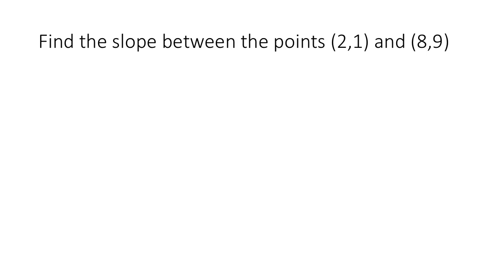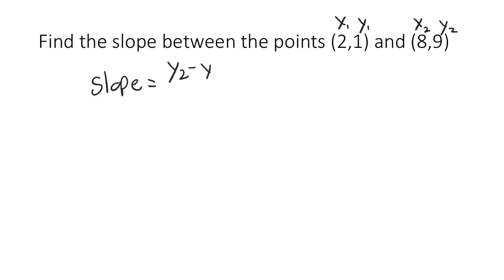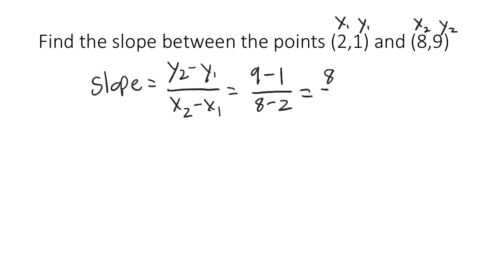Let's use our newfound formula to find the slope between these two points: (2, 1) and (8, 9). We just need to know the values of x1, y1, x2, and y2. We can label them: x1 = 2, y1 = 1, x2 = 8, y2 = 9. So the slope is going to be y2 minus y1 over x2 minus x1 — that's 9 minus 1 over 8 minus 2. 9 minus 1 is 8, and 8 minus 2 is 6, so 8 over 6 is our slope. We usually want to give this as a reduced fraction, so this reduces to 4 over 3. That's the slope between our two points.